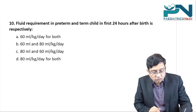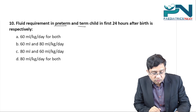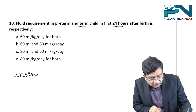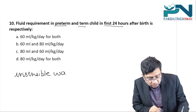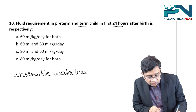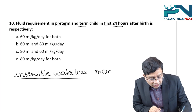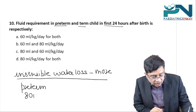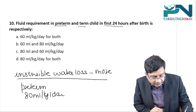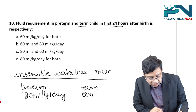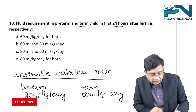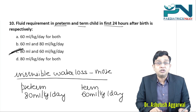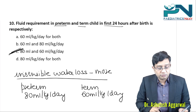The last question: fluid requirements in preterm versus term children in the first 24 hours after birth. In a preterm child, insensible water loss is greater, so they require more fluid on day one — 80 ml/kg/day. In a term child, the requirement is 60 ml/kg/day. The right answer is choice C. These were MCQs related to Neonatology Basics and Resuscitation. I hope you liked the questions.